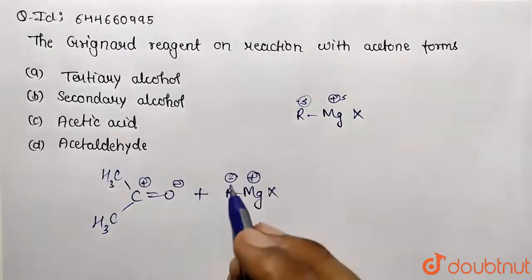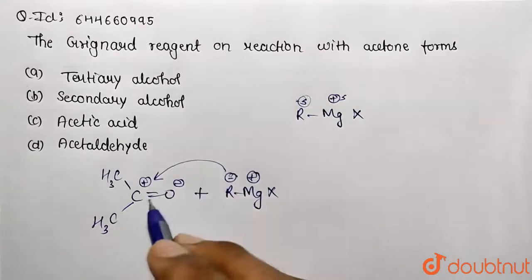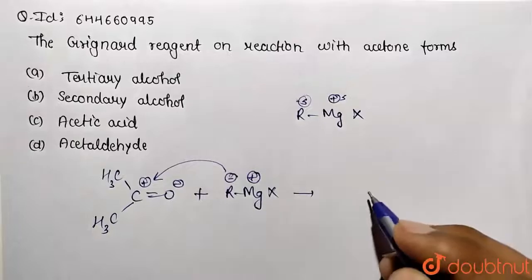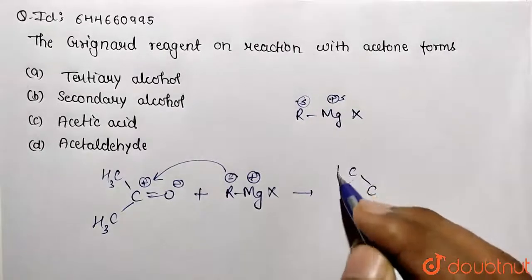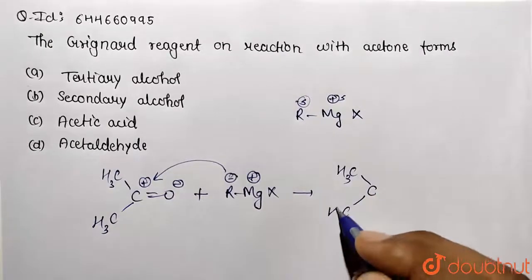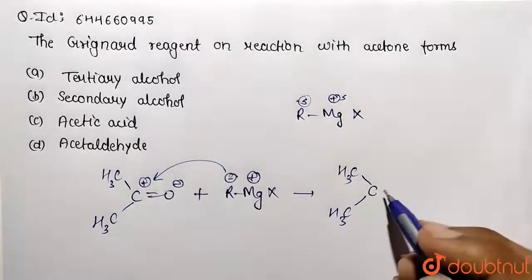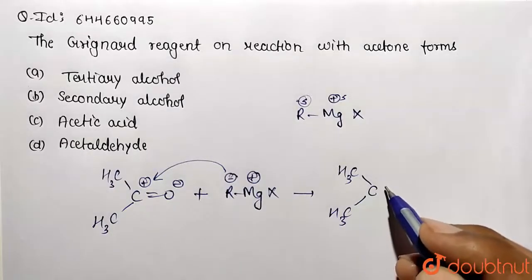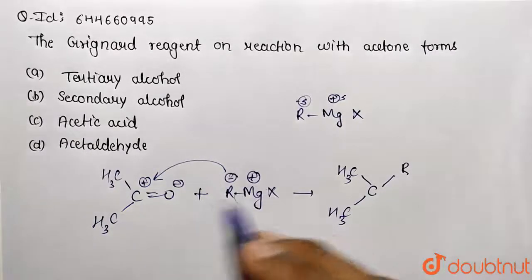So this is going to have forming the intermediate. So R is going to be attacking on this carbocation and this intermediate product will be formed. So this is CH3 group over here and this is CH3 group over here. And this R is going to attack on one position, so one position will be occupied by R and another, this substituent will be attached over this side. So this is OMgX.